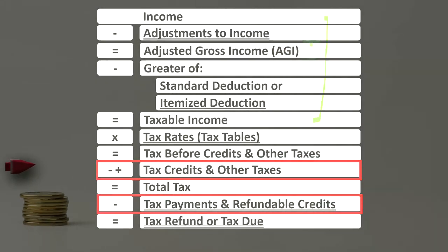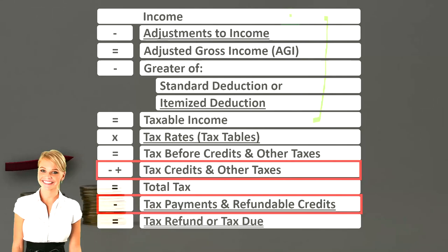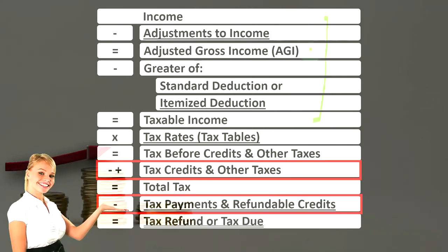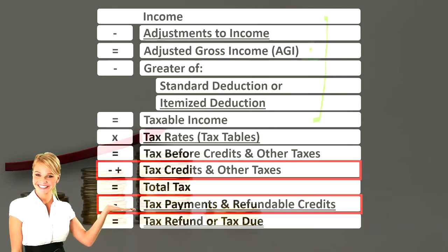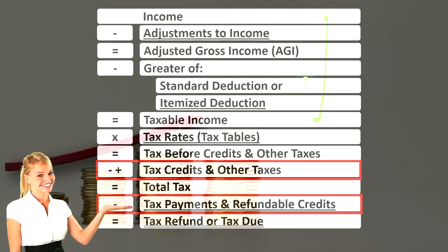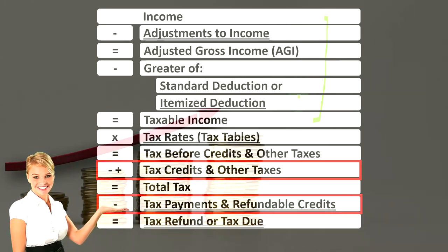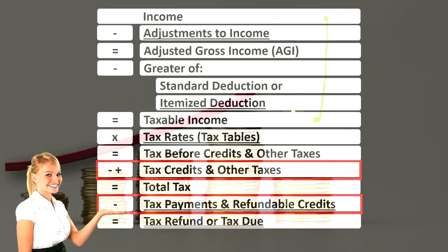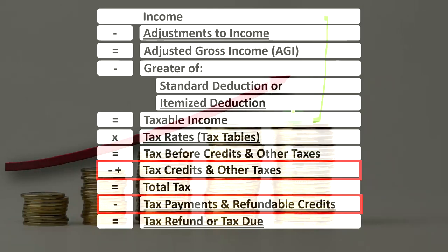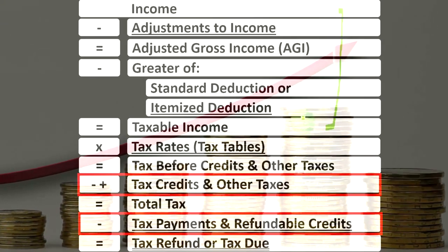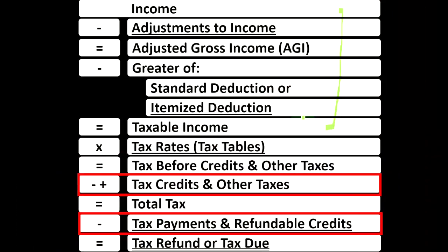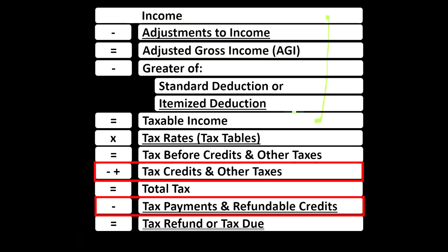That phase-out is usually not based on the top-line income level, but rather on the adjusted gross income, or AGI number. We then subtract the greater of the standard or itemized deduction to get to taxable income, which is similar to net income on a normal income statement — kind of the bottom line of the income tax formula.